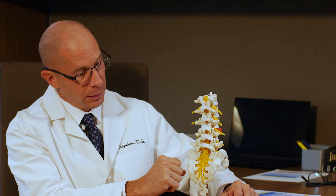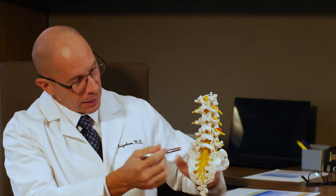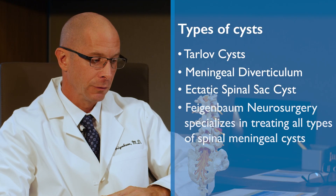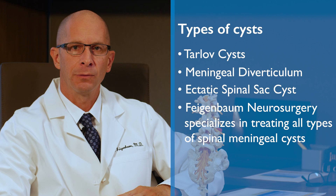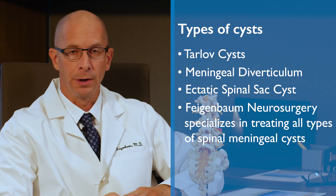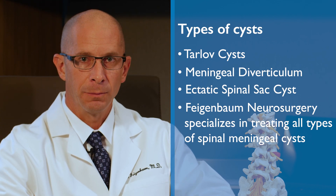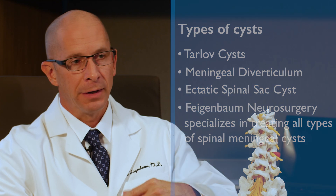An Ectatic Spinal Sac Cyst is a cyst of the Spinal Sac itself. In other words, the Spinal Sac doesn't come to a nice tapered end — the end of the Spinal Sac itself balloons out and takes up a bunch of space in the canal and pushes on the nerves, which can also cause symptoms. Those are the three most common types of Spinal Meningeal Cysts, particularly in the sacral area. The benefit to coming to our practice is that we've treated all the different types of cysts many hundreds of times, and we're able to identify the specific type and treat it appropriately, because each type has a different origin and requires a different technique for treatment.